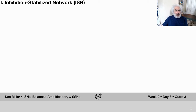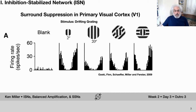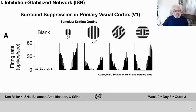The first topic is inhibition-stabilized networks, or ISNs. The story begins with surround suppression in primary visual cortex, V1, in the case of the cat. Neurons in primary visual cortex are selective to visual stimuli in a particular region of the visual field called their receptor field - in this case about a two-degree diameter region for the neuron being recorded. We're seeing an optimally oriented grating drifting across this two-degree patch. When the light is over the light-preferring regions and dark over the dark-preferring regions, the neuron responds well.